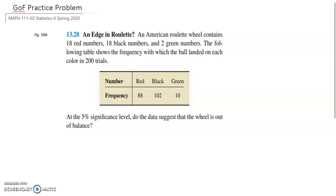So the first thing is to get an idea of what's going on here. We have an American roulette wheel that contains 18 red, 18 black, and two green numbers. The following table shows the frequency with which the ball landed in each color in these 200 trials. The question is being asked at the 5% significance level, do the data suggest that the wheel is out of balance?